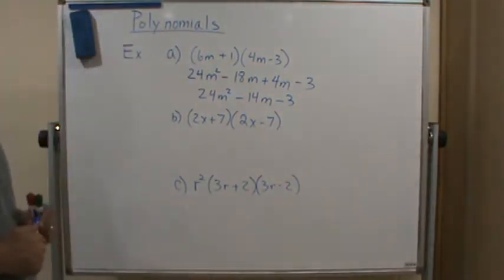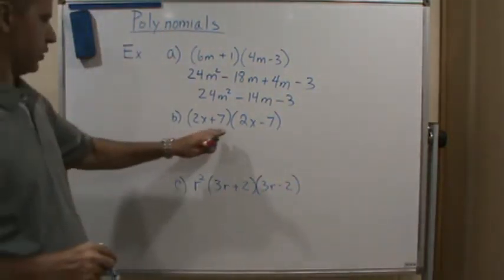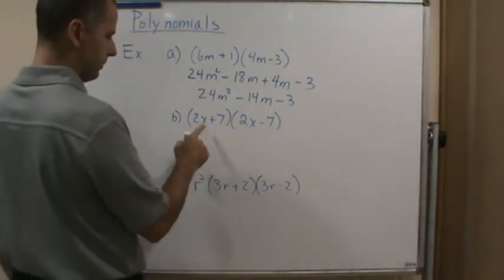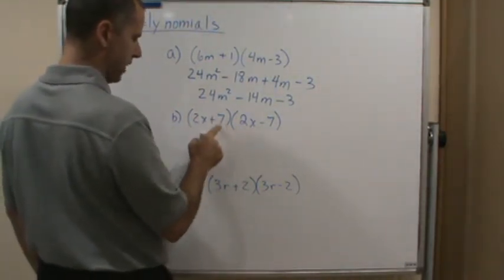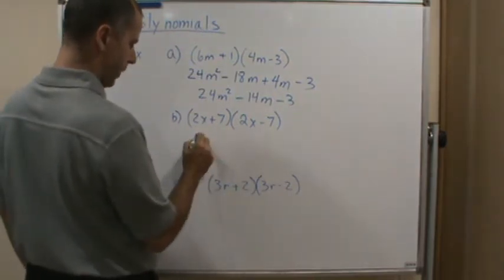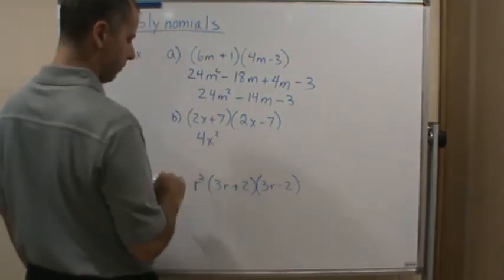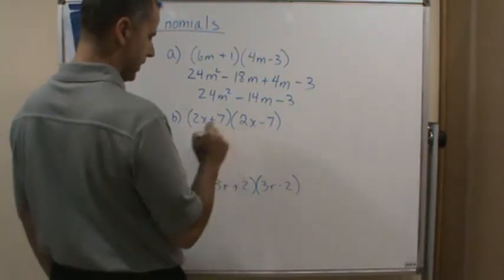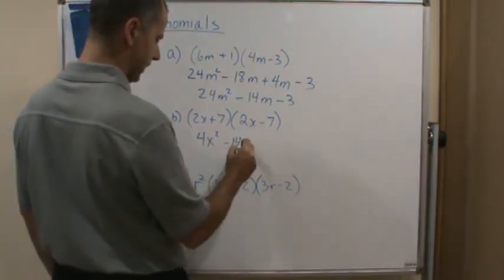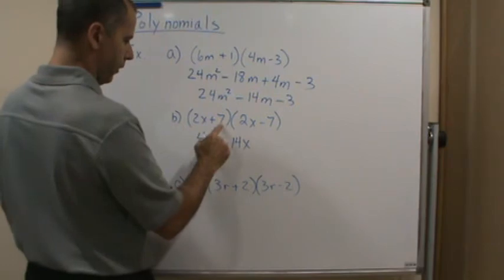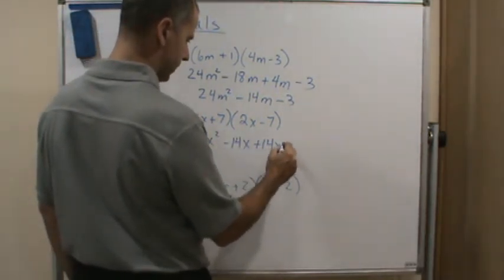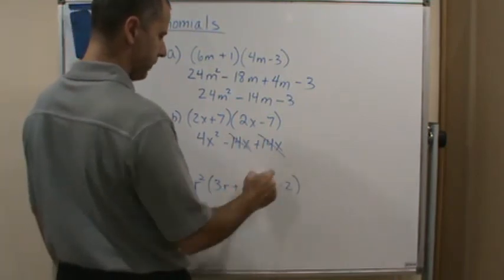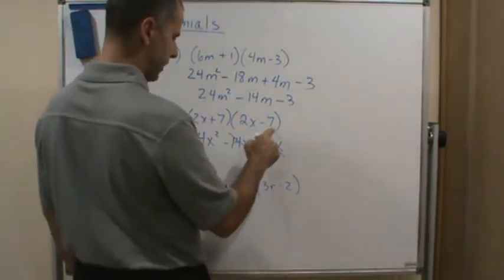Let's do the next one. I'm going to do the same thing - distribute the 2x across these two, then distribute the 7 across these two. So 2x times 2x is 4x squared, 2x times negative 7 is minus 14x, 7 times 2x is plus 14x - look at that, these two cancel out - and then 7 times negative 7 gives me minus 49.